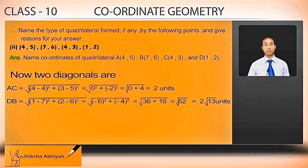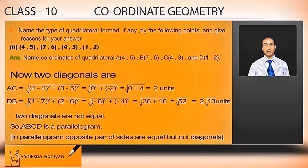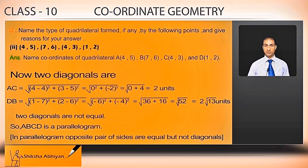The diagonals are not equal but the opposite pair of sides are equal. This could be a rectangle or parallelogram, but in a rectangle diagonals must also be equal, whereas in a parallelogram diagonals are not equal. Since opposite pairs of sides are equal but diagonals are not equal, ABCD is a parallelogram. Question is completed.